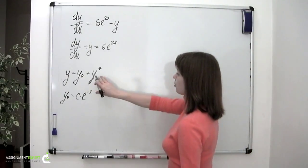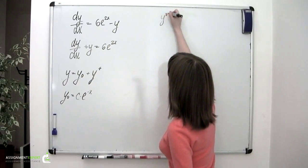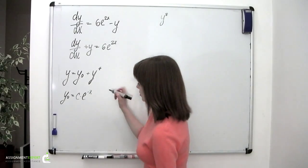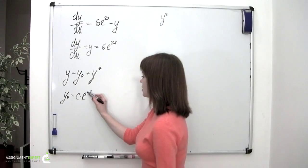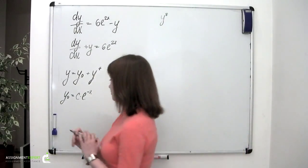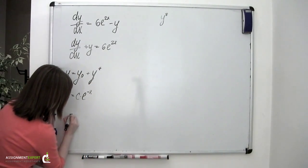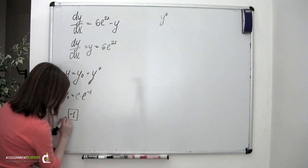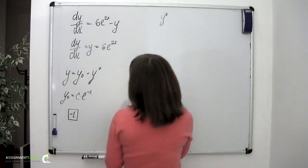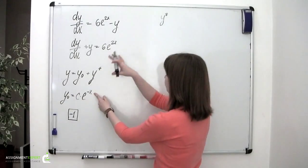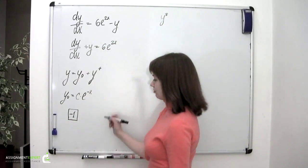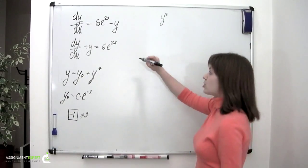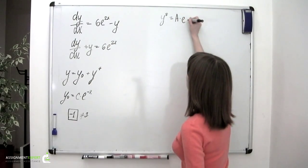Now let's find y*. To do this, let's take another look at the previously found y₀. As we can see, the power of e is negative 1 times x. This means that negative 1 is the so-called characteristic number. And if we compare these two powers, we'll see that they are different — negative 1 is not equal to 2. This means our particular solution can be found as A times e to the power of 2x.